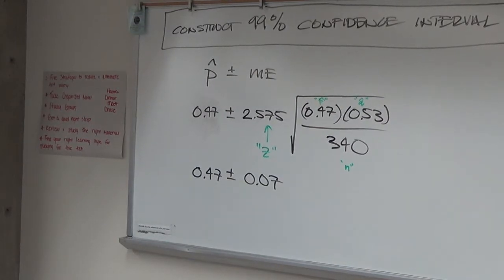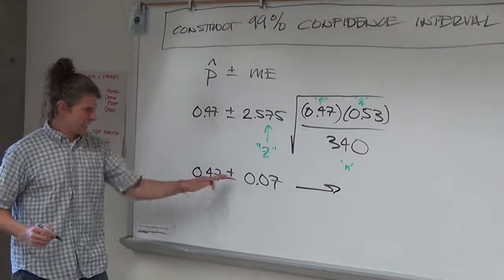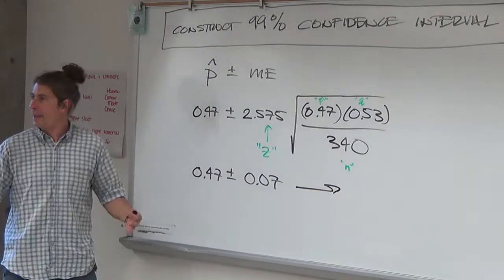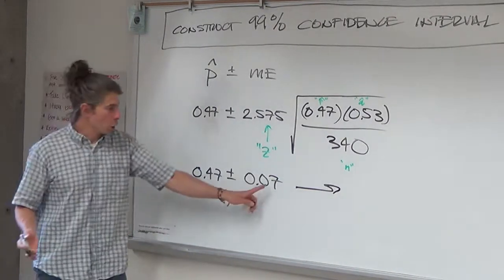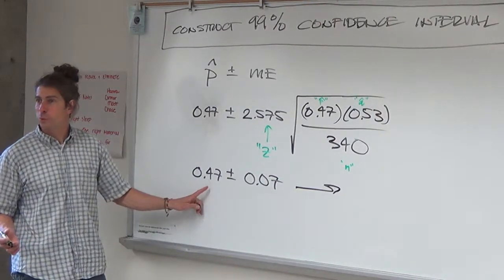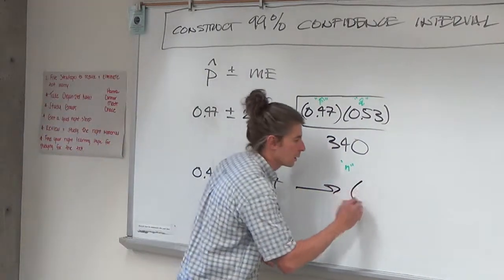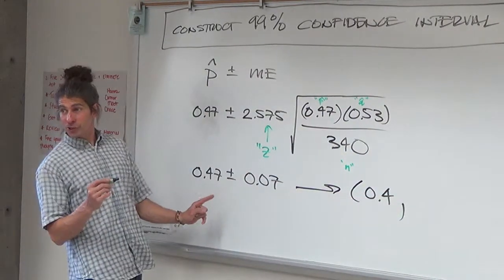Remember what Alan said earlier as a hint. You either add 0.07 or you subtract 0.07. So, Nick, what you're saying is, I don't like saying it like this. Let's subtract and add the 7% to it and call 7% from the 47 gives what, 40%? Up to 54%.